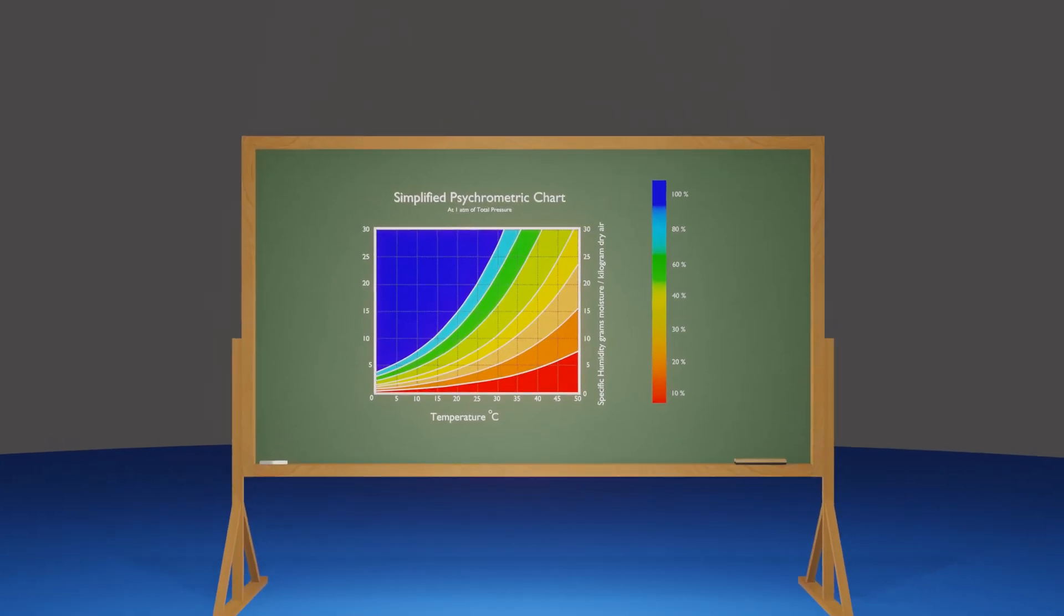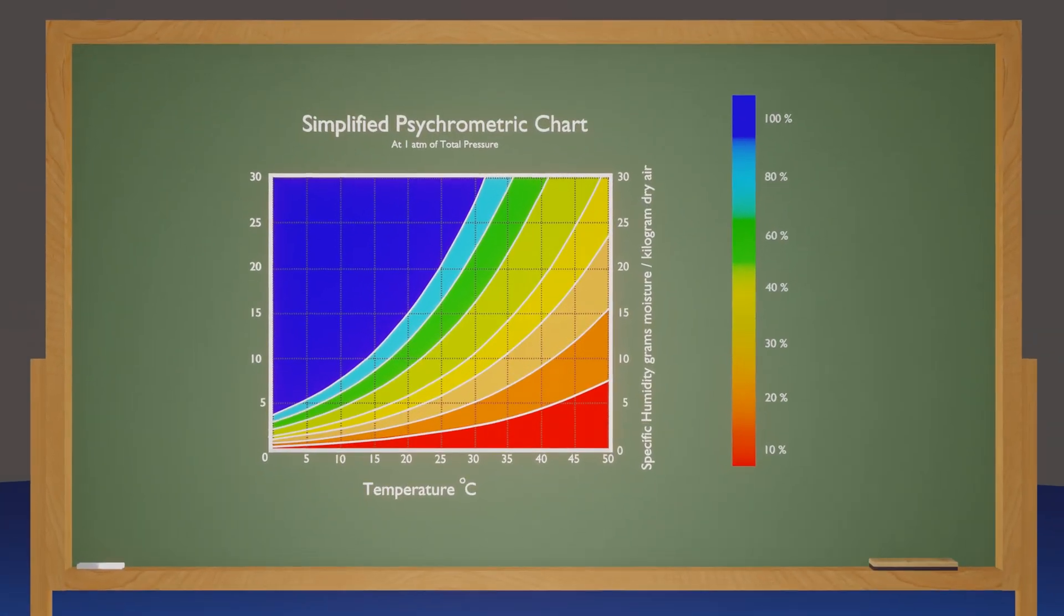This is all tied together through a psychometric chart. In this psychometric chart, we will see two very familiar variables, one being temperature and the other being the amount of humidity in the air.